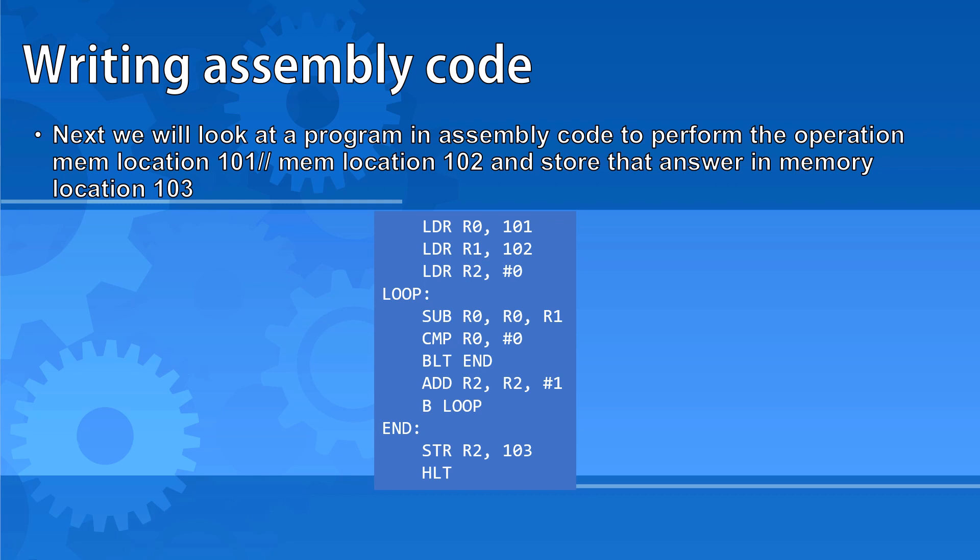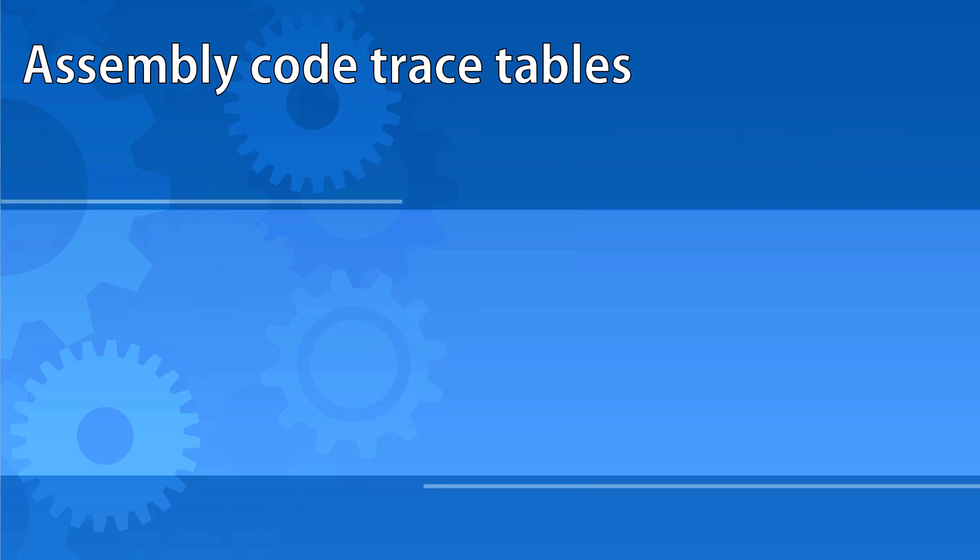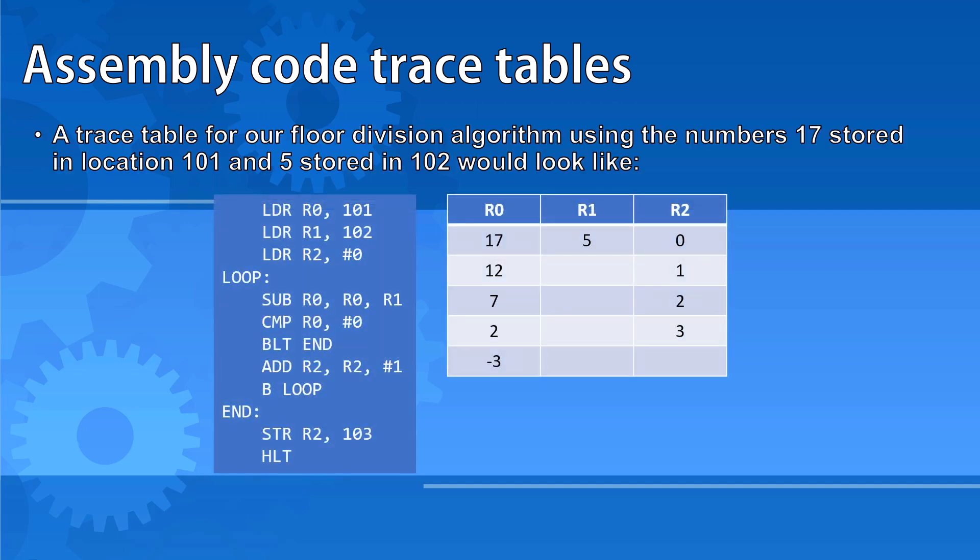In some past exams, you've been required to create a trace table showing the value of the registers during the execution of some assembly code. If we have a look at the trace table for our code that we've just seen, using the numbers 17 as the number stored in location 101, and 5 as the number stored in 102, we can see that at the start, we would put 17 in register 0.